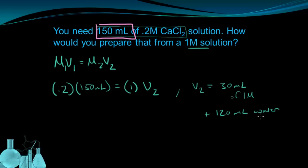Essentially what this is saying is that to prepare 150 milliliters of the 0.2M solution, I need to take 30 milliliters of the 1M solution and dilute it down by adding 120 milliliters of water.